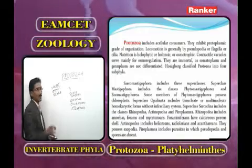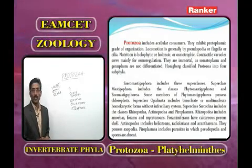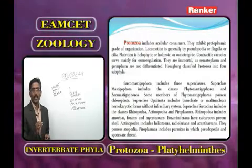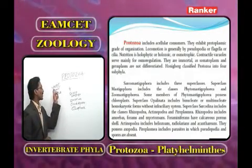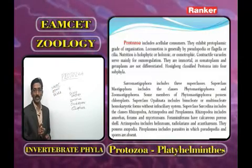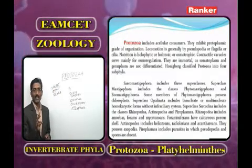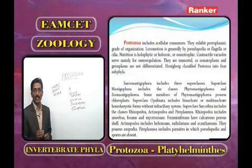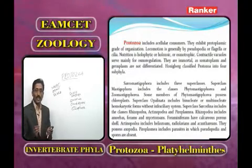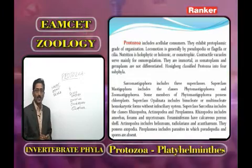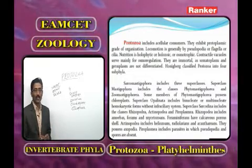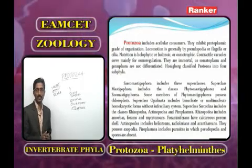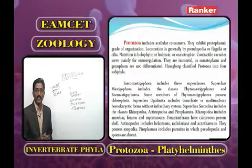The other name of Mastigophora is Flagellata because majority of mastigophorans perform locomotion with the help of flagella. Mastigophora is classified into two classes: Phytomastigophora and Zoomastigophora. In Phytomastigophora, the important plant character — chloroplast — is present. One example is Euglena, another is Volvox.